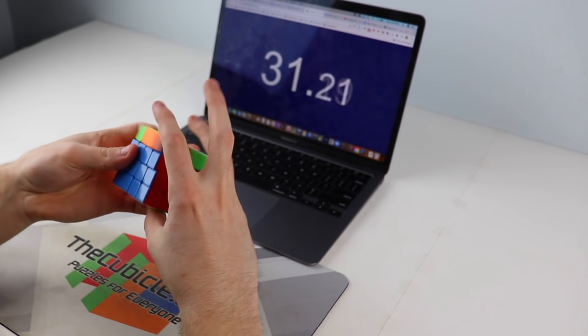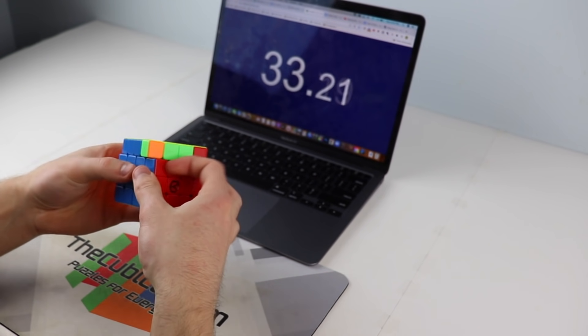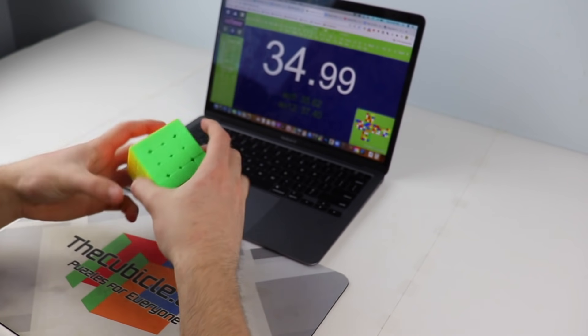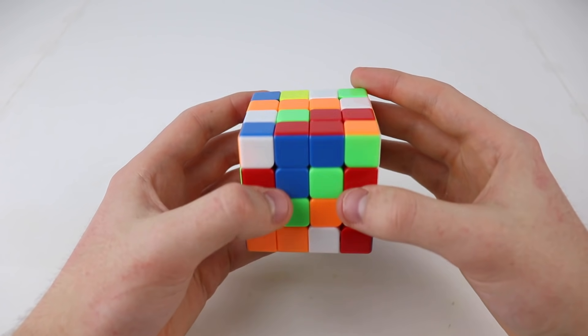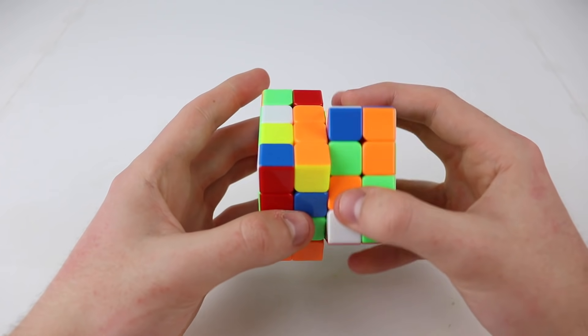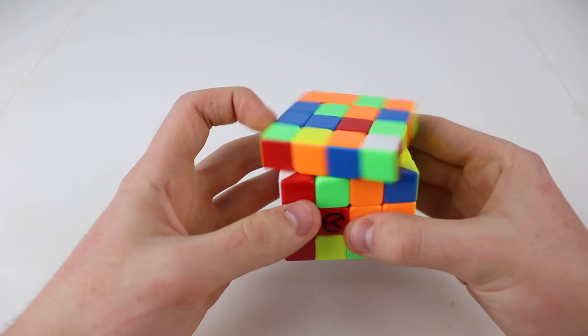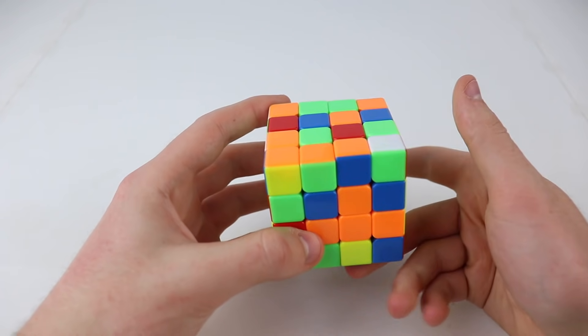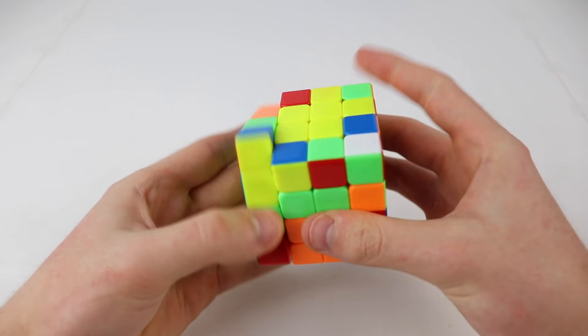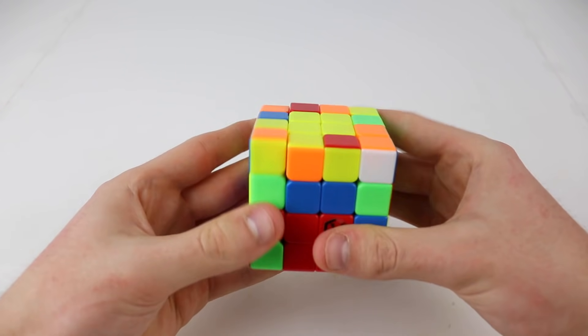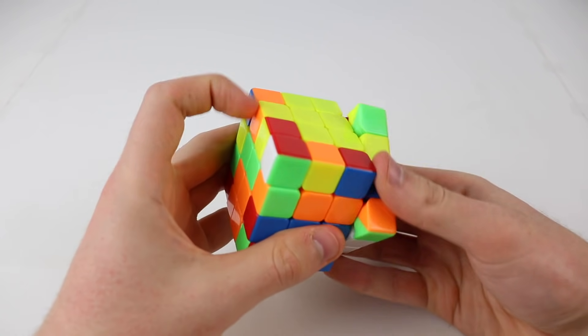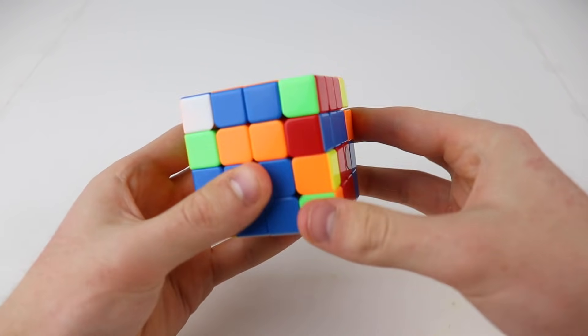Another concept that's super helpful is knowing where to turn slow and where to turn fast. For example, building your first three edges is very hard and benefits a lot from efficiency. Therefore, it's better to turn slowly so you can look ahead as much as possible. On the other hand, looking ahead during 3-2-3 edge pairing is easy, so you should turn as fast as you can while you're doing that.